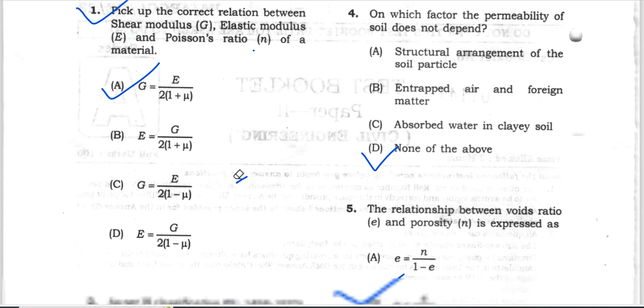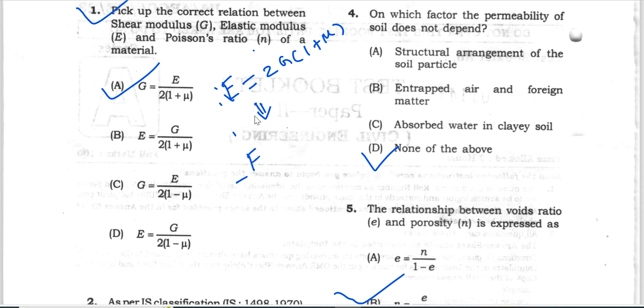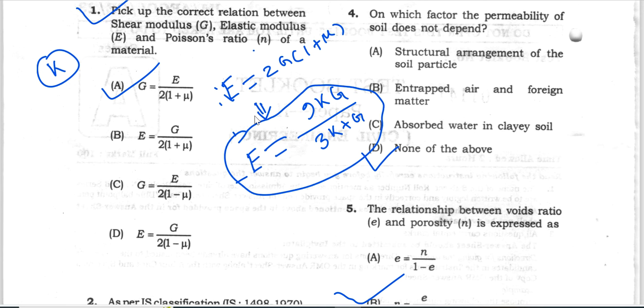First question: pick up the correct relation between shear modulus, elastic modulus, and Poisson's ratio. The relationship is E equals 2G times (1 plus mu), where E is elastic modulus, G is shear modulus, and mu is Poisson's ratio. Option number B is correct. An additional important relationship is the bulk modulus: E equals 3K times (1 minus 2 mu), where K is bulk modulus. Another relationship is 1/E equals 9/(9K plus G), relating bulk modulus, elasticity modulus, and shear modulus.